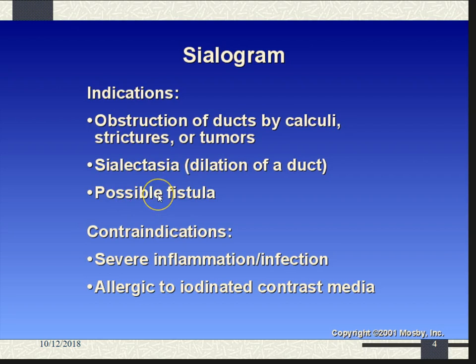There can also be fistulas. A fistula anywhere in the body is just an abnormal communication between tubes that normally should not be — for example, if somebody had a hole in one of these ducts, there could be a fistula opening out into the throat. Contraindications: if somebody has severe inflammation or a bad infection, we'll medicate them with an antibiotic and have them come back later — just a delay, not a cancellation. If somebody's allergic to iodinated contrast, that's generally a showstopper.